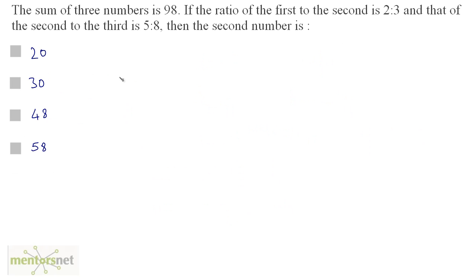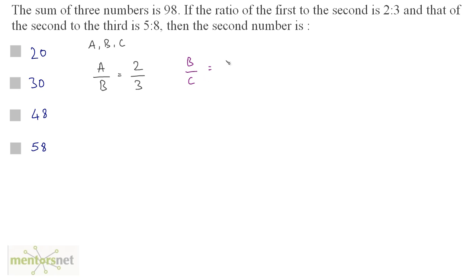The sum of three numbers is 98. If the ratio of the first to the second is 2 is to 3, and that of the second to the third is 5 is to 8, then the second number is? Let these numbers be A, B and C. The ratio A by B equals 2 by 3, and B by C equals 5 by 8.